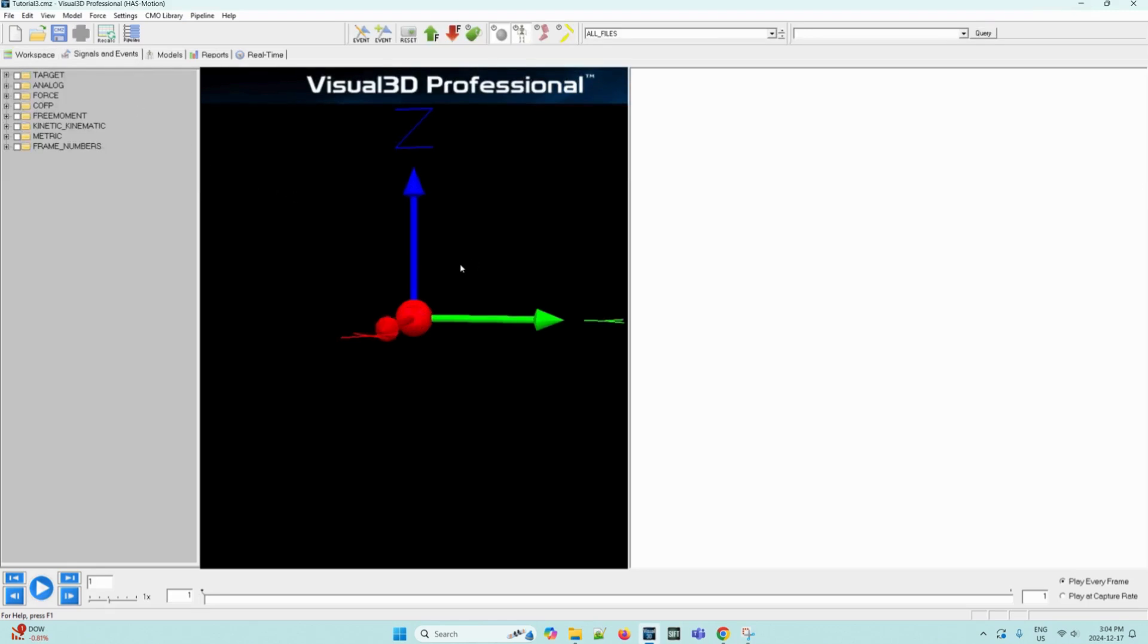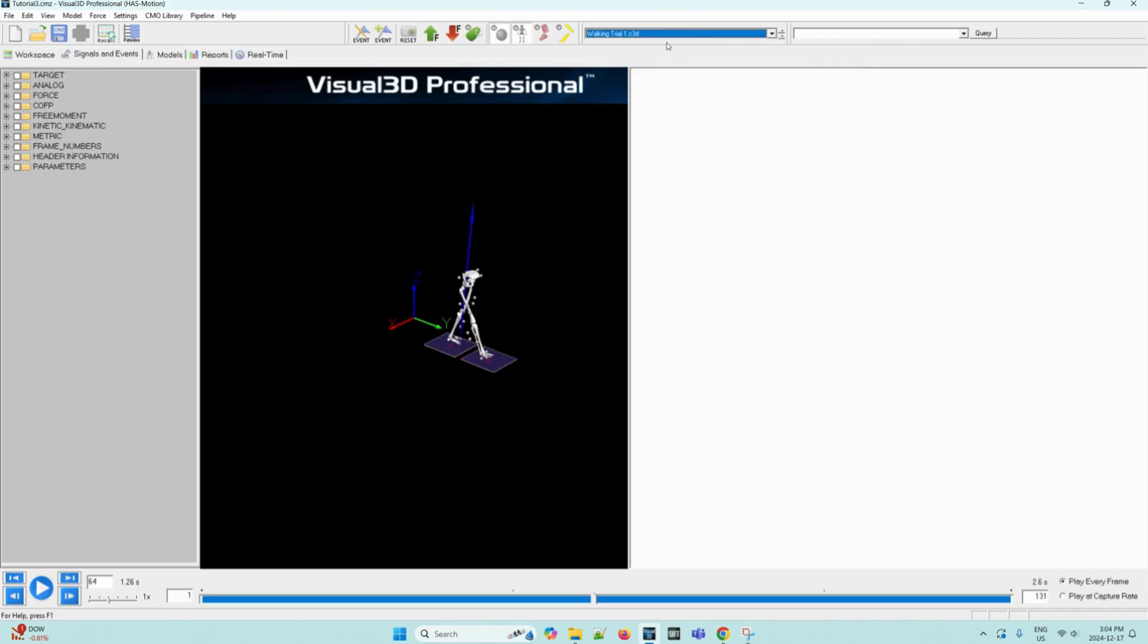If the animation doesn't appear in the 3D animation viewer, as we can't see it here, we have to check the combo box on the top right and make sure it says walking trial1.c3d rather than all files. Now that this has been loaded in, we can see that the model has appeared.